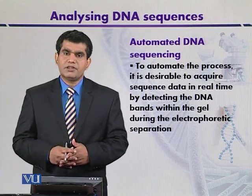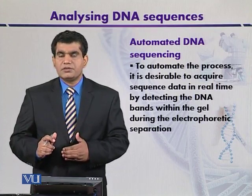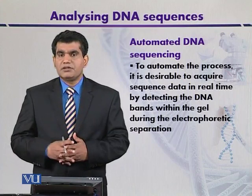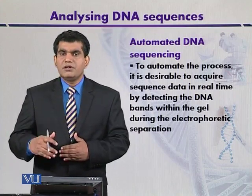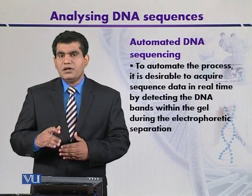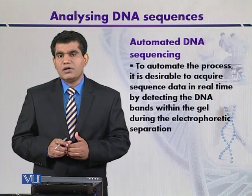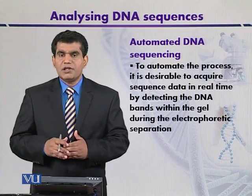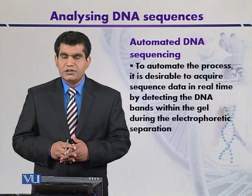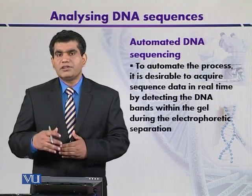In the Sanger method, reactions are carried out separately in four different reaction mixtures. After performing the reactions, the different fragments — which are variable in length — are detected using a specific detector. All the fluorophores used are different for each respective dideoxynucleotide triphosphate: adenine has a different fluorophore, and similarly different chemical dyes are used for the other nucleotide bases.